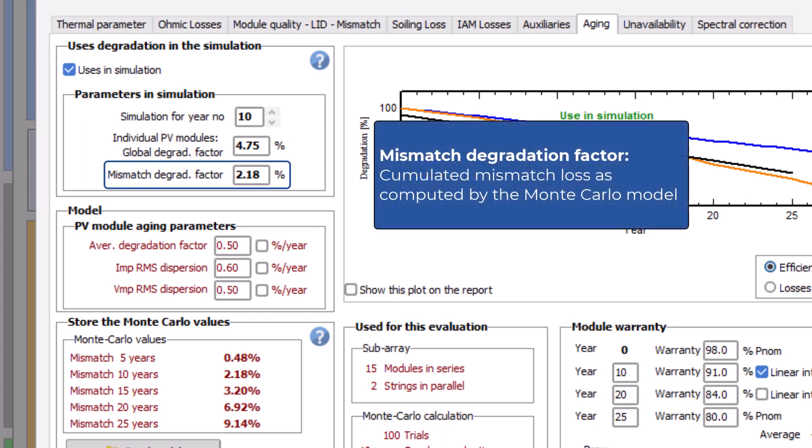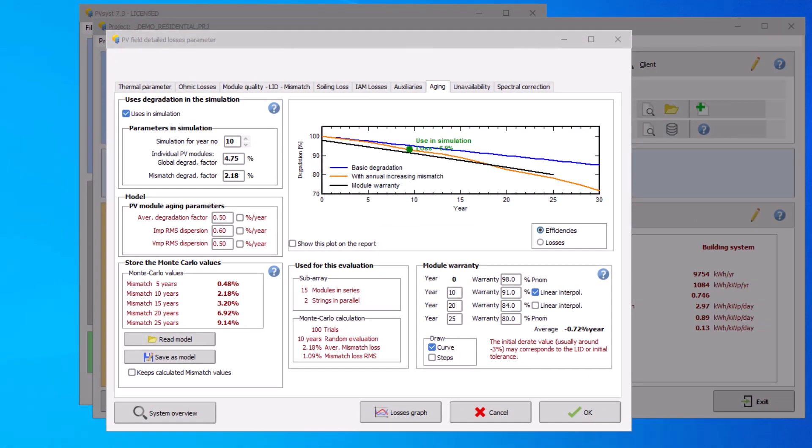The mismatch degradation factor is the cumulative mismatch loss as computed by the Monte Carlo model. The Monte Carlo method is a procedure that uses randomly generated numbers to solve a problem. In our case, this means that PVSYST will generate a series of randomly aged PV modules, assemble them to strings and calculate the resulting mismatch loss. Repeating this a number of times yields an average mismatch loss, which is displayed in the group Monte Carlo values.